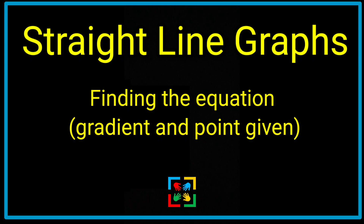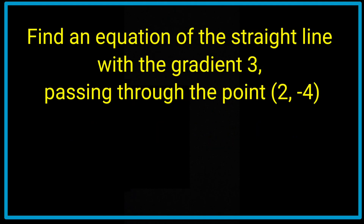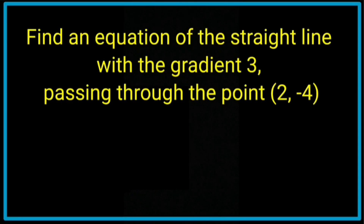In this video, I'm going to show you how to find the equation of a line given the gradient and one point. So the question asks: find an equation of the straight line with gradient 3 passing through the point (2, -4). The first thing I'm going to do is highlight the key information — the gradient is 3 and the point it passes through is (2, -4).